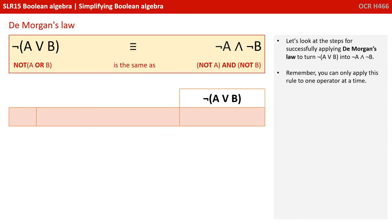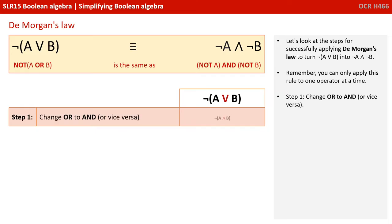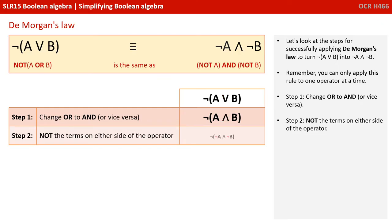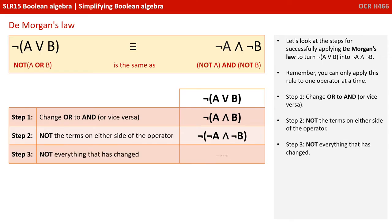So let's look at the steps for successfully applying De Morgan's law to turn NOT(A OR B) into NOT A AND NOT B. Remember, you can only apply this rule to one operator at a time. Step one: change the OR for AND or vice versa. Step two: NOT the terms on either side of the operator. Step three: NOT everything that has changed.